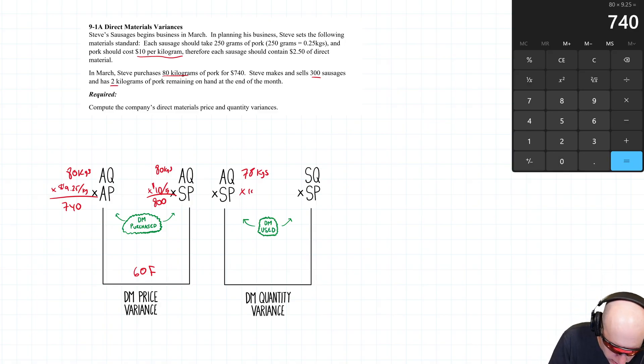SP remains the same. It's supposed to cost $10 per kilogram. So 780 is what's on this prong of the calculation. SQSP, well, SP remains $10 per kilogram.